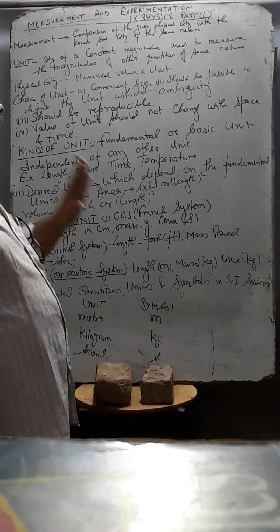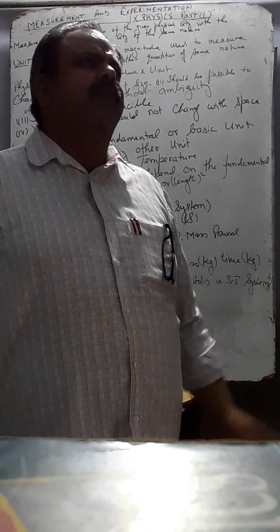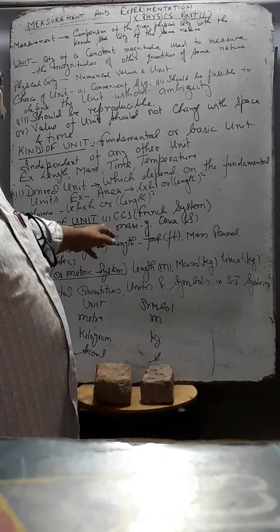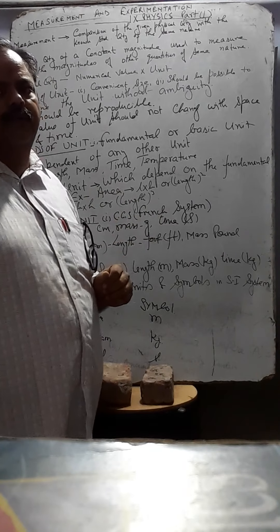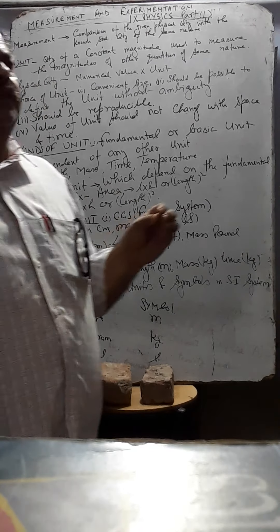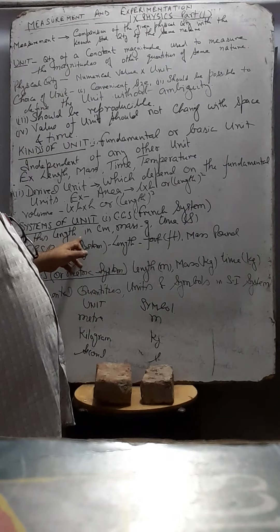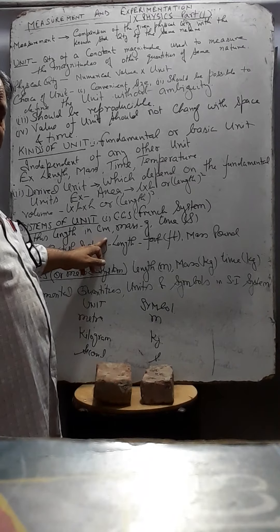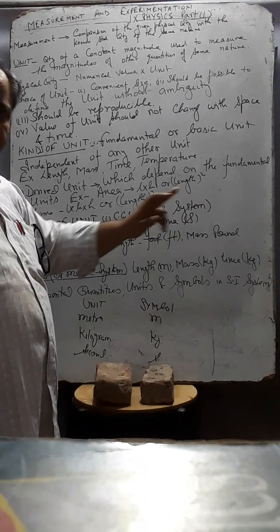Systems of the unit. Initially, in the olden times, they were formed in the different systems. Like, first of all, French system was there. CGS system. CGS system. French system. CGS system. In which the length is measured in centimeter. Length is measured in centimeter. Mass in grams. And time in seconds.